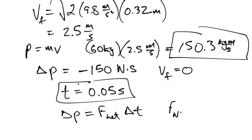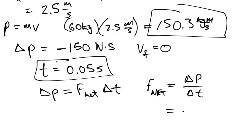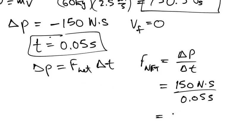Hence, the net force is going to equal delta P over delta T. So therefore, it's simply 150 Newton seconds over a time of 0.05 seconds. And that's going to give us 3,005 or just over 3,000 Newtons of force.